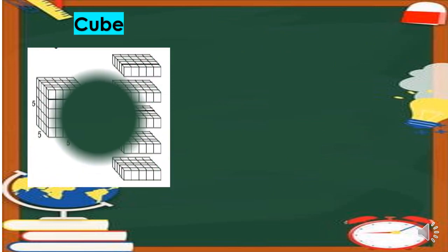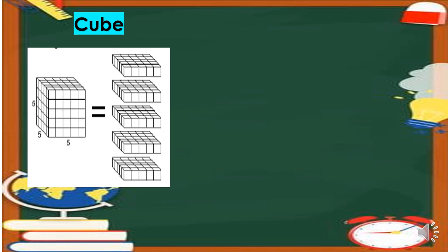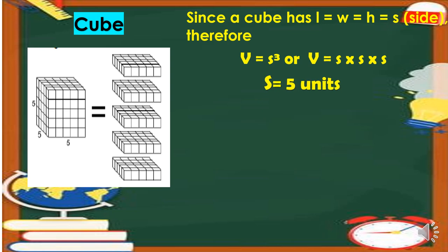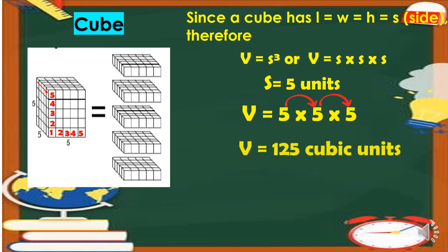Now let us have the cube. This is a sample of a cube. A cube has equal length, width, and height for all sides. Therefore, the formula we use is V equals S cubed, or V equals S times S times S. The sides have 5 units each — length 5, height 5, and width 5. So the volume is V equals 5 times 5 times 5, which equals 125 cubic units. This cube has 125 cubic units.